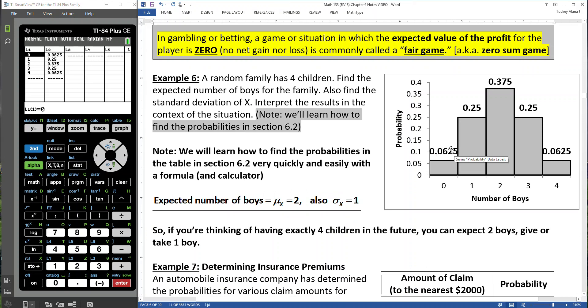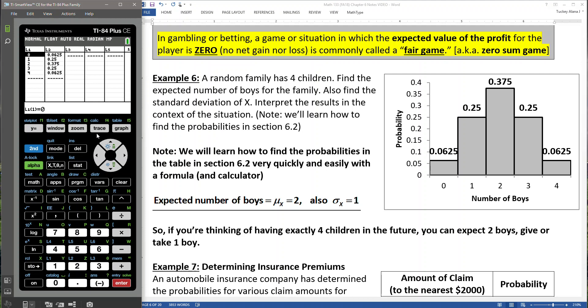See the 0.0625, the 0.25, 0.375, and so on. Those are the numbers we just came up with with the binom PDF, the probability of zero boys, the probability of one boy, and so on. Let me go back to 6.2.